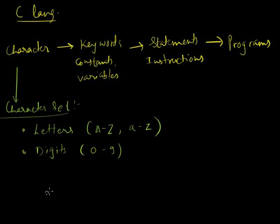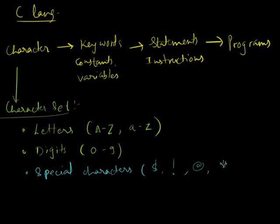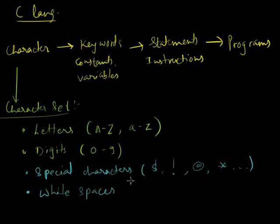After digits, we have special characters — like dollar, exclamation, at the rate, asterisk, and many more. Also, there are some characters which you cannot see; such characters are called white spaces. White spaces are characters which are not visible and do not usually make sense, like the tab character or the space character.